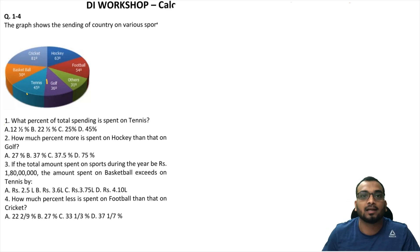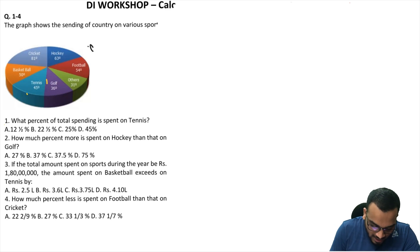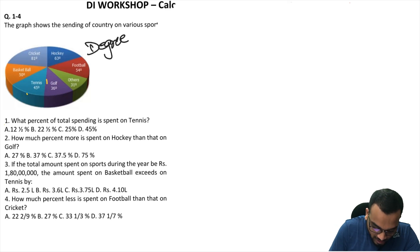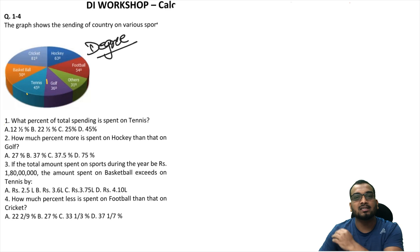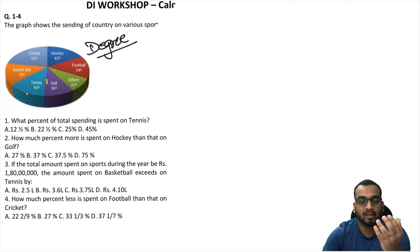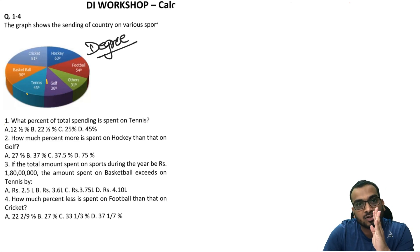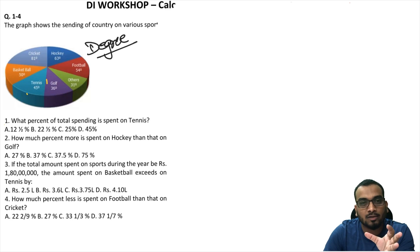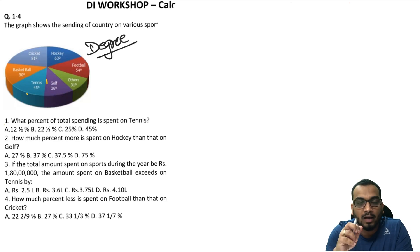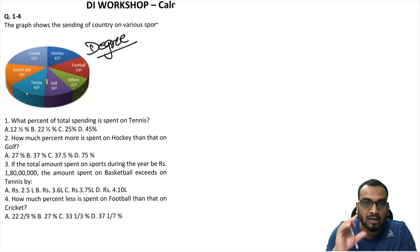This pie chart is different because here we have been given degree calculations. So here we have to convert degrees into percentages, and that is where this kind of data interpretation set is a little bit time-consuming. But in today's video we will actually try it using shortcuts in less time.